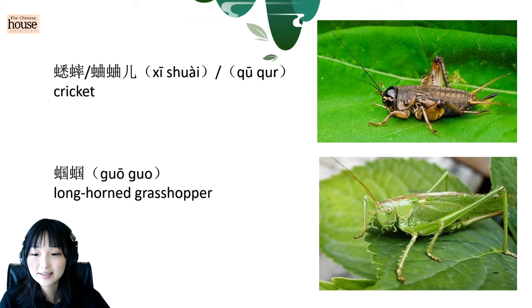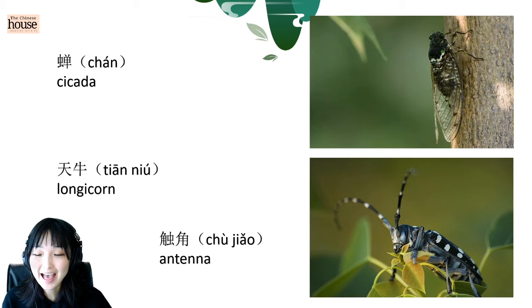And then, longhorn grasshopper. 锅果. Read after me. 锅果. Light tone. 锅果. Very good. 蚁蚁. 蚁蚁. Good. Longhorn. 天牛. 天牛. 天牛. Nice.